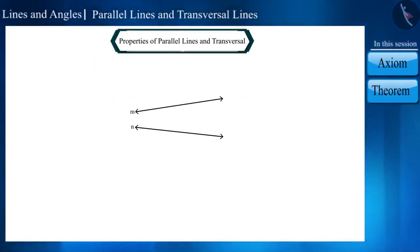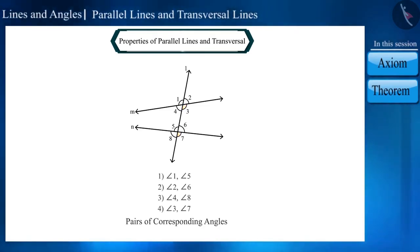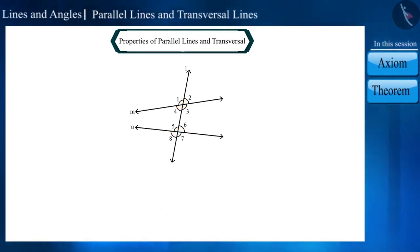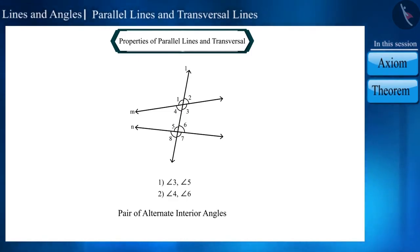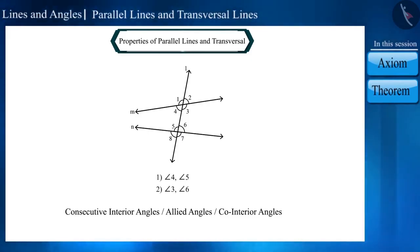We know that when two lines are intersected by a transversal, different types of pairs of angles are formed. For example, these are pairs of corresponding angles and these are pairs of alternate angles. We call these alternate exterior angles and these are called alternate interior angles. The pair of interior angles formed on one side of the transversal are called consecutive interior angles, or allied angles, and sometimes these are called co-interior angles.